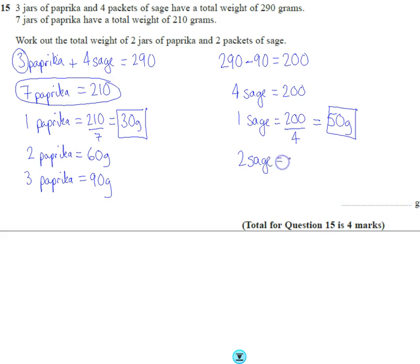Let's work out 2 sages then, let's just double that. So that means 2 sage is 100 grams. So we want to take the 100 grams of sage, the 60 grams for the paprika because it's 2 of each, so the total is going to be 160 grams.